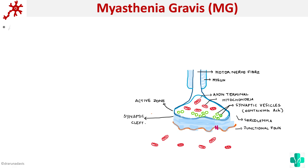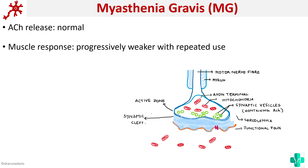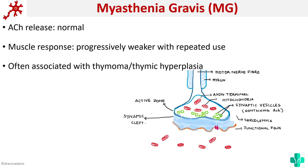In myasthenia gravis, the release of acetylcholine is normal, but because there are no acetylcholine receptors on which it can bind, the response of the muscle will be less and it will be progressively weaker with repeated use. This condition is often associated with thymoma or thymic hyperplasia — hyperplasia of the thymus is found in most cases, and that may be one reason why these antibodies are present.